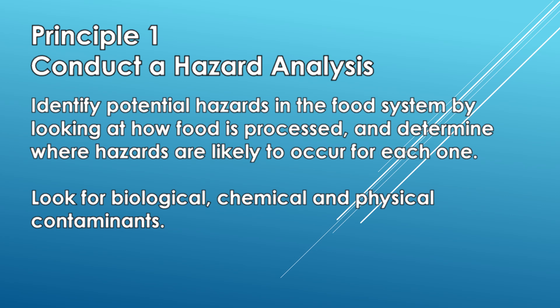Principle 1 — Conduct a hazard analysis: identify potential biological, chemical, and physical hazards in the food system by looking at how food is processed and determine where hazards are likely to occur for each one. Factors that contribute to outbreaks of foodborne diseases and applied research on ecology, multiplication, and inactivation of foodborne pathogens are identified. Initial hazard analysis is longer than inspection, but valuable information about the food process is obtained during this process.